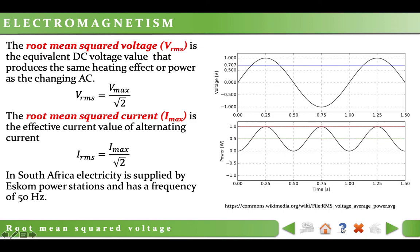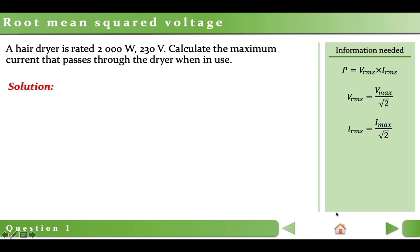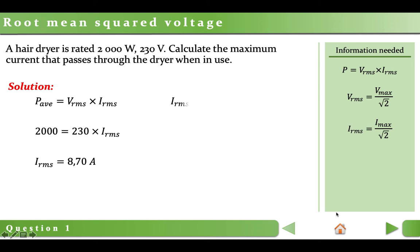Let's solve some questions related to this part of the topic. Question 1: A hair dryer is rated 2000 W, 230 V. Calculate the maximum current that passes through the dryer when in use. If it is not stated otherwise, the provided power is the average power and the voltage is the RMS voltage. Using these values, we calculate RMS current from: Power equals RMS voltage times RMS current. Power is 2000 W, RMS voltage is 230 V, so RMS current equals 8.70 A. RMS current is √2 times smaller than maximum current, so maximum current will be 12.30 A.